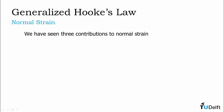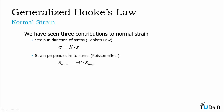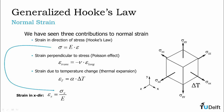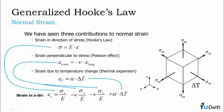So far, we have seen three contributions to normal strain. We get a direct strain as a result of a normal stress through the Young's modulus. Perpendicular to that applied stress, we get a Poisson effect — a contraction. And if there is a temperature change, we get thermal expansion of the material. If we apply these three contributions for a general state of stress in the Cartesian coordinate frame, where we have sigma xx, sigma yy, and sigma zz applied to the material as well as a temperature change delta T, we can begin to calculate the strain in the x-direction. As a result of Hooke's law, we get a component equal to sigma x divided by the Young's modulus. Due to the Poisson effect, we get a contribution due to sigma y, as well as a contribution due to sigma z. And finally, we also get a contribution due to the temperature change.